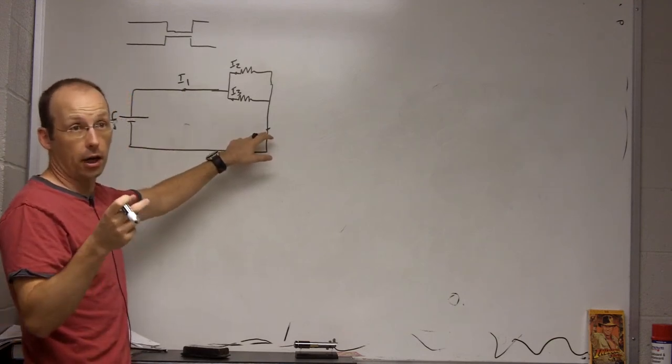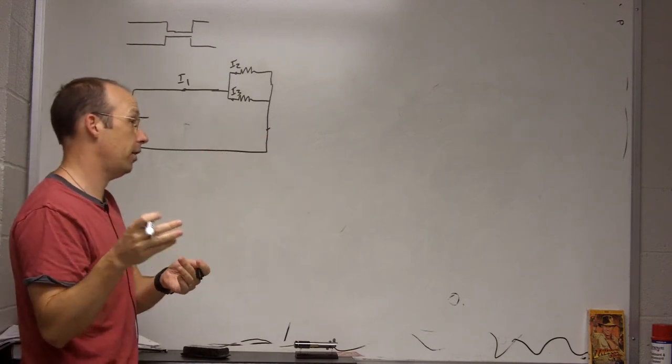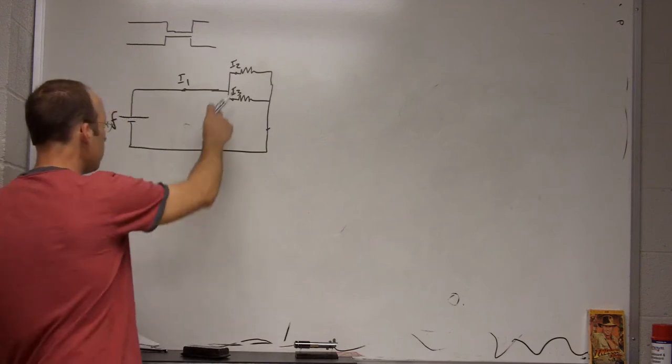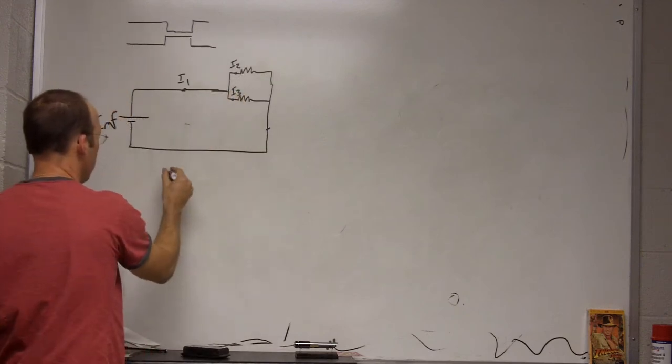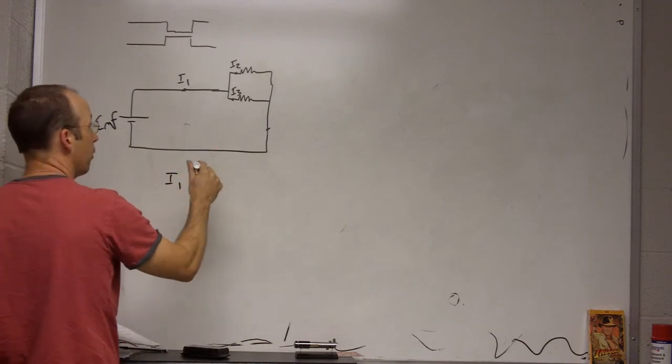The question asked about a compass. If you have the same current, it's going to make the same magnetic field, and deflect the compass the same amount. Well, right here, we have a node. And so, at a node, we also know that the current coming in has to be the current coming out.